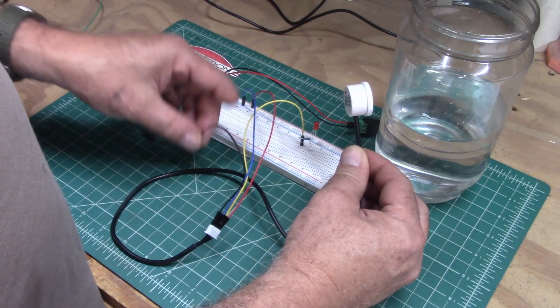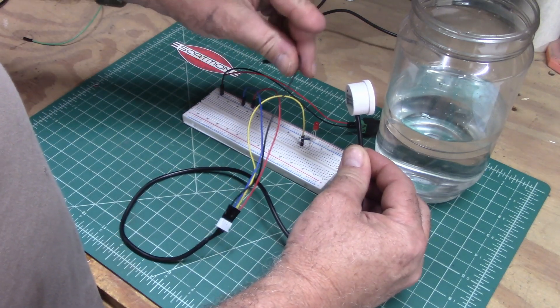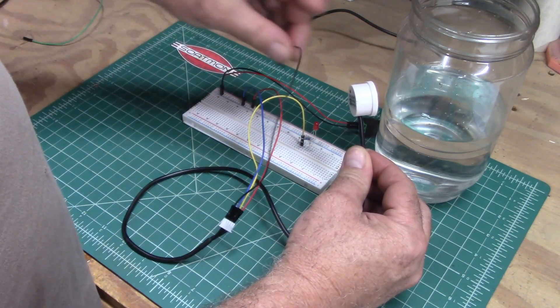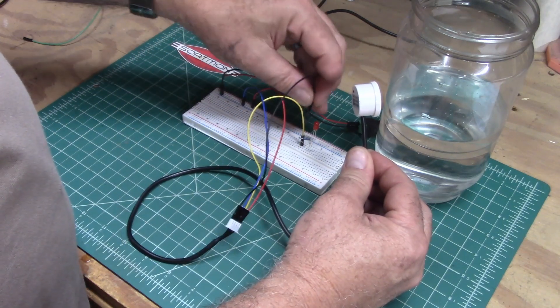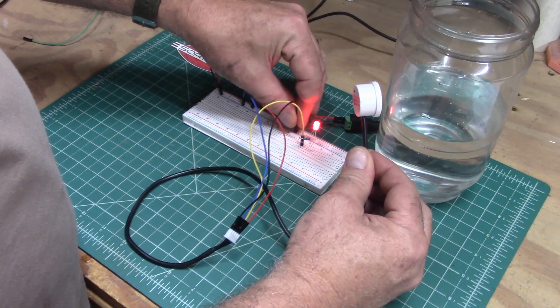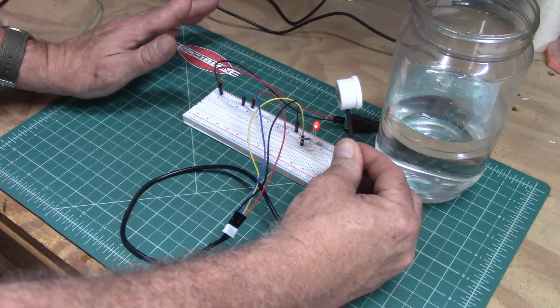So if you connect this black wire to negative, like this, it's going to do the opposite of that.